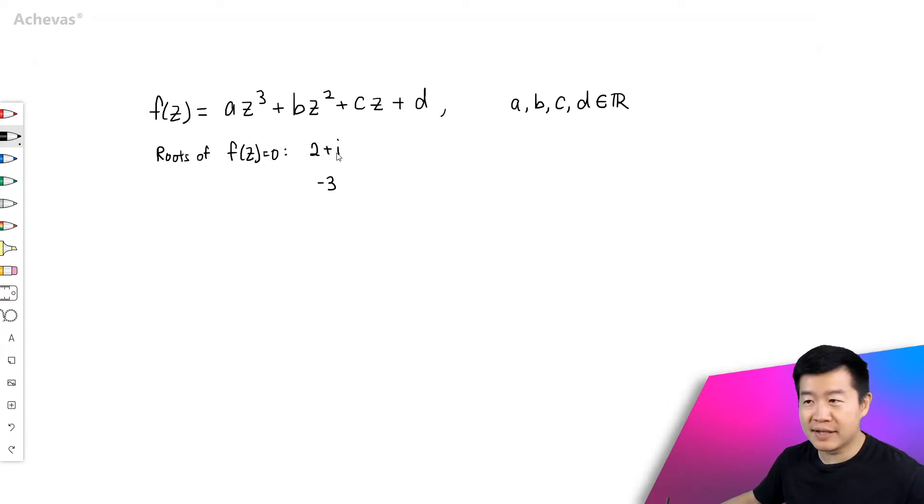When f(z) is matched to 0, there are two roots that are given: 2 plus i and minus 3. And since the coefficients of f(z) are all real numbers, we can actually deduce the third root.